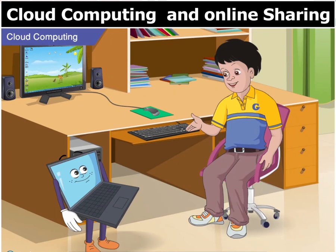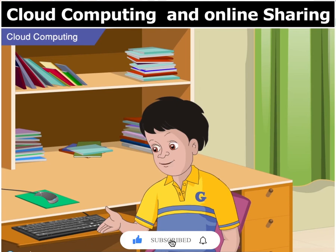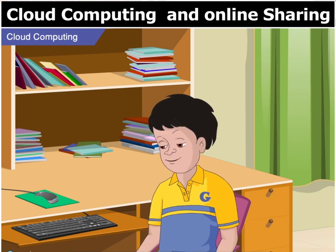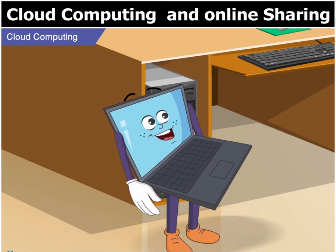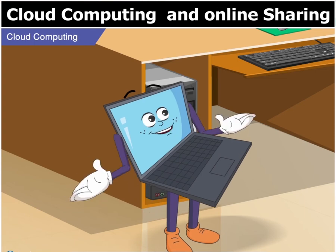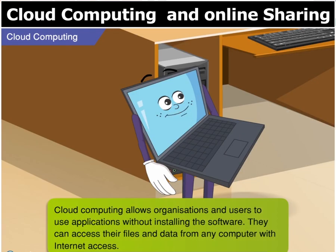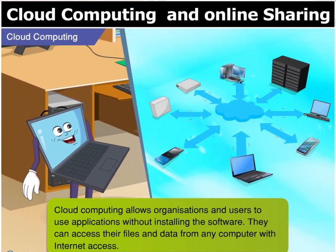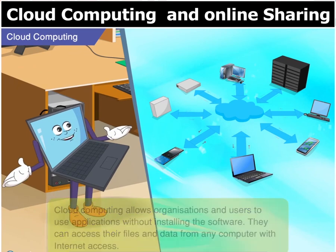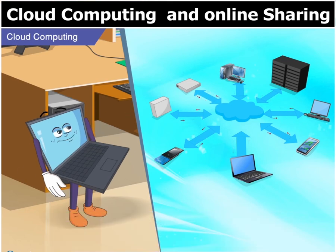Later, Toggle. For now I have a question. What is it, Goggle? Toggle, you mentioned that we can save any kind of information on the cloud. What should I do if I wish to update my document and save it again in the cloud? Very good question, Goggle. You can do so by updating it on your local system and then storing it again on the cloud, or else you can simply do it through cloud computing. Cloud computing? Yes, Goggle — cloud computing allows users to use applications without installing the software. They can access their files and data from any computer with internet access. Cloud computing is very efficient and cost effective as it has centralized storage, memory and processing.